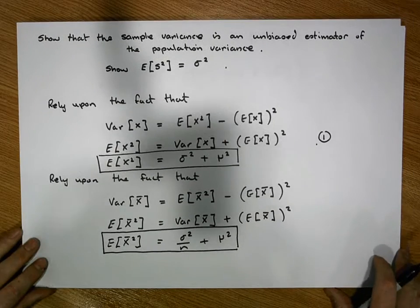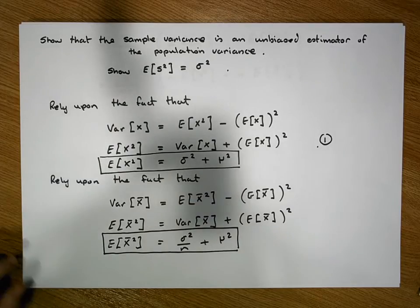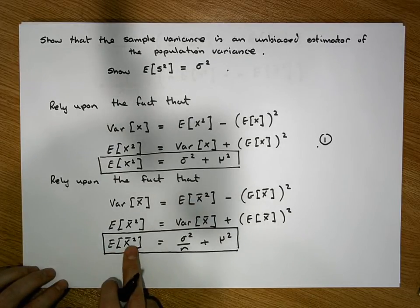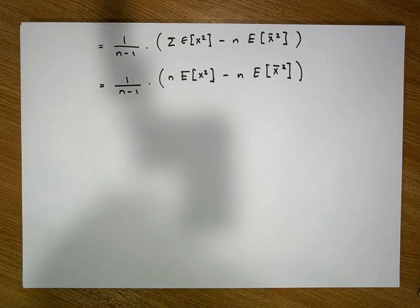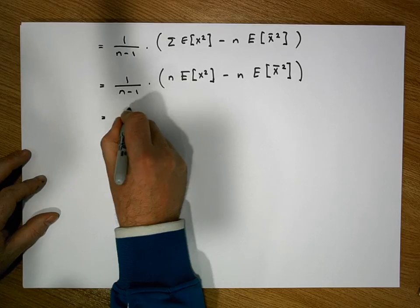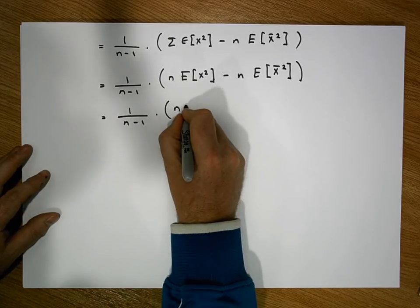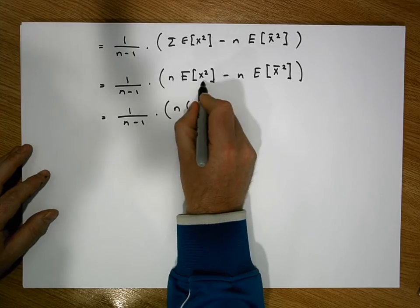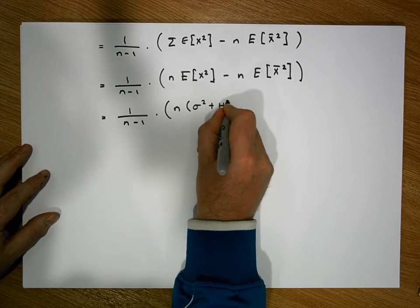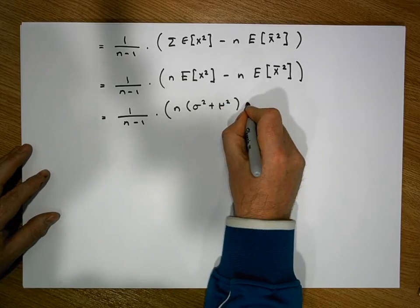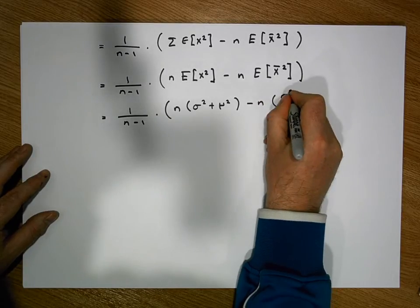From our two previous identities, we know that the expected value of x squared is simply equal to sigma squared plus mu squared, and that the expected value of x-bar squared is equal to sigma squared over n plus mu squared. So this becomes 1 over n minus 1 times n times (sigma squared plus mu squared), minus n times (sigma squared over n plus mu squared).